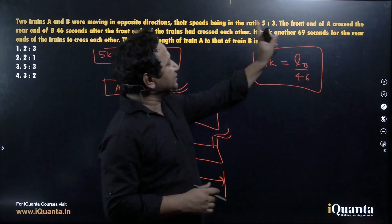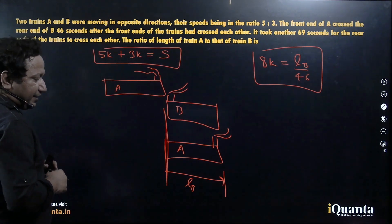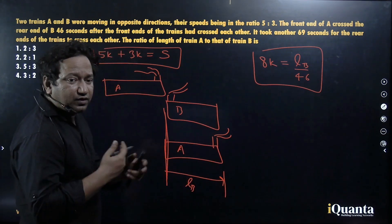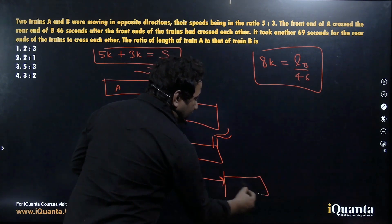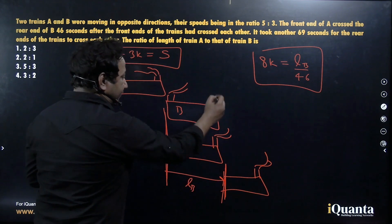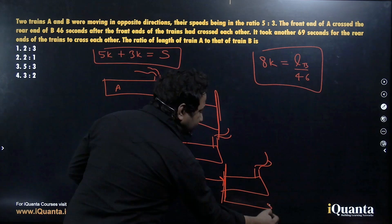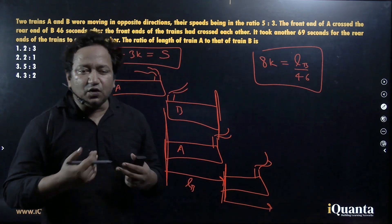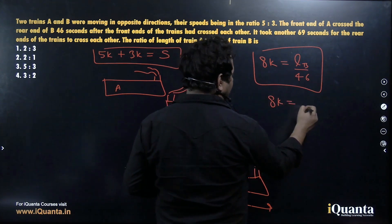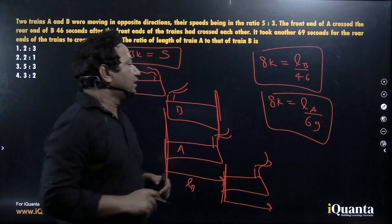Then what happens? It took another 69 seconds for the rear ends of the trains to cross each other. As you can see, train A's front and train B's rear are already crossing each other. And then train A moves further and the rear ends, this is the rear end of train A, rear end of train B, they are crossing each other. From this position to this position, train A has travelled its own distance. That means, we can say, the speed is equal to length of train A upon 69. We have two expressions now.